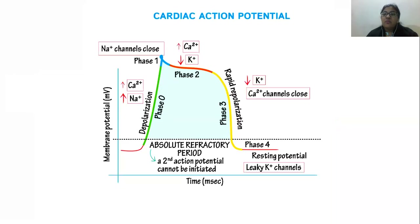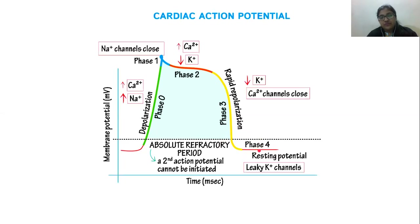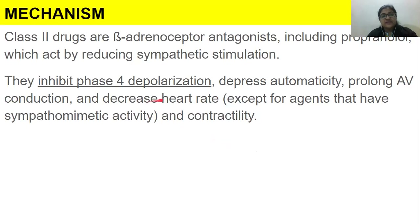Depolarization means that positivity is getting inside the cell. When we talk about repolarization, it means positive ions are going out of the cell and negativity is being increased within the cell. So when we say it inhibits phase four depolarization, it means it will inhibit positivity from getting inside — and that is how the effect is produced.